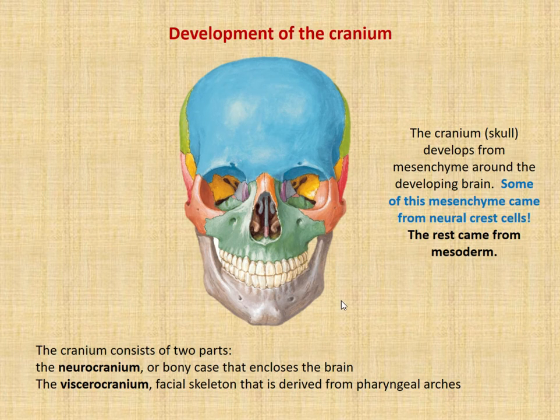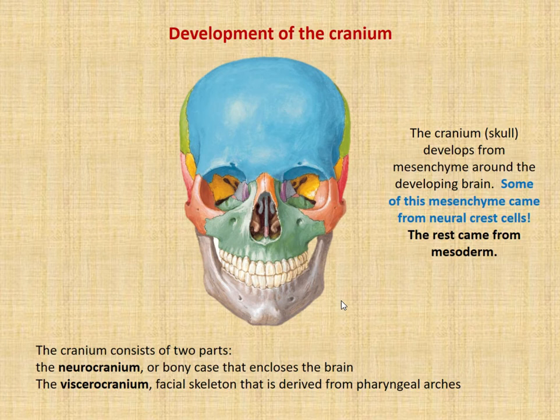We're going to specifically hone in on development of the cranium. The cranium is going to develop from mesenchyme that surrounds the brain coming from the neural tube. Some of the mesenchyme came from neural crest cells in this area, so you have connective tissue in the head and neck region that comes from neural crest cells — that's unique and unusual compared to the rest of the body. The rest of the mesenchyme in the head, specifically turning into the cranium, came from mesoderm, so you have a mixture here.